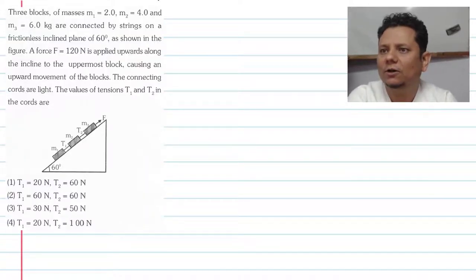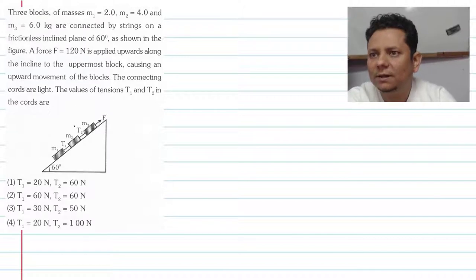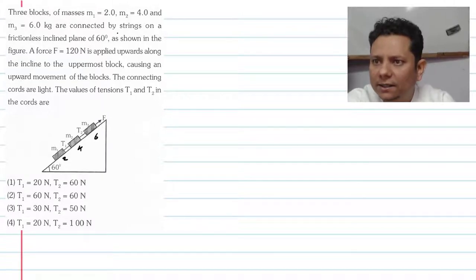Next question. The question says 3 blocks of mass M1 equals 2 kg, M2 equals 4 kg, and M3 equals 6 kg are connected by a string on a frictionless incline plane of 60 degrees as shown in the figure.